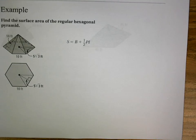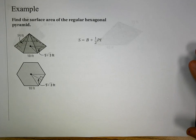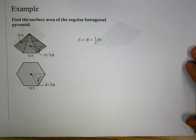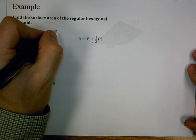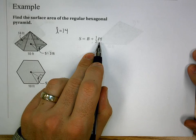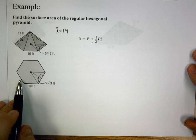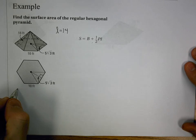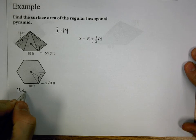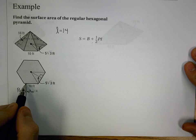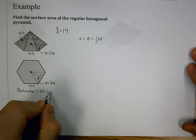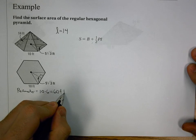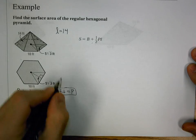Now let's look at a pyramid with a regular hexagon as the base. We have slant height 14, so we already know that. The perimeter of the hexagon with side length 10 is 10 times 6 sides, giving perimeter = 60 feet.